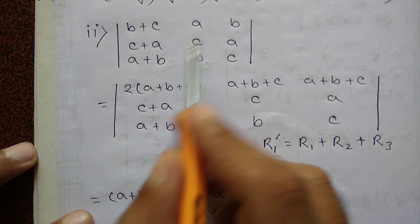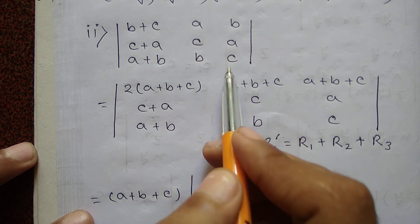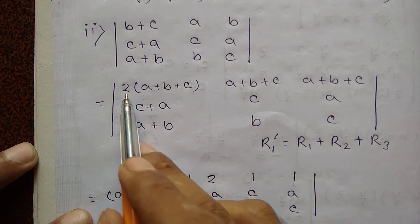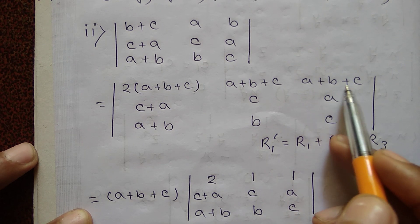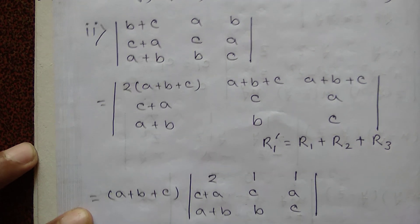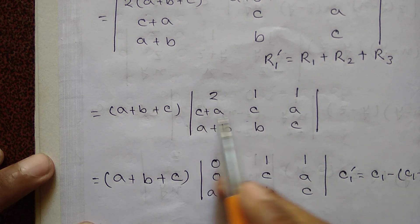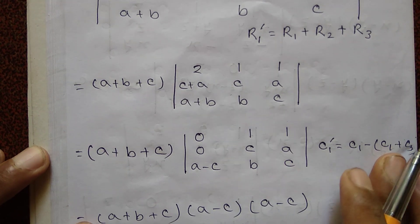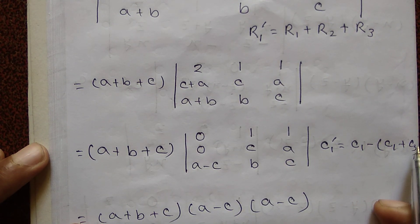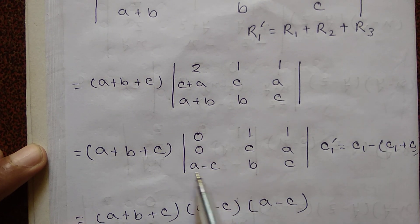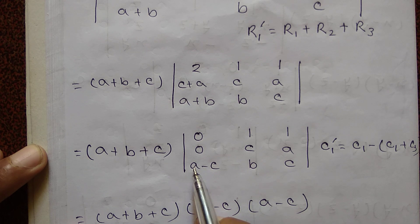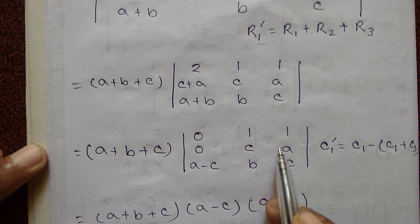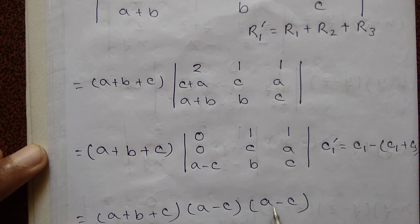Next problem: Determine the determinant of the matrix with rows: b plus c, c plus a, a plus b; a, c, b; b, a, c. First operation R1 prime equal to R1 plus R2 plus R3. R1 prime equals 2 into a plus b plus c, a plus b plus c, a plus b plus c. Then C1 prime is equal to 0, 0, and c a minus c.